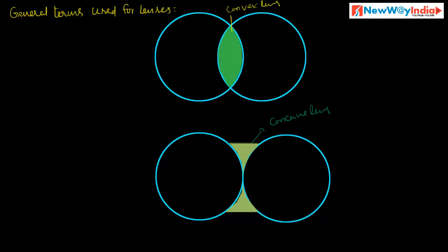What are the important terms related to lenses? The first one is center of curvature. The center of curvature is the center of the halosphere — the center of the imaginary glass halosphere of which the lens is a part. This lens is a part of this halosphere, therefore the center of the halosphere becomes the center of curvature of the lens.